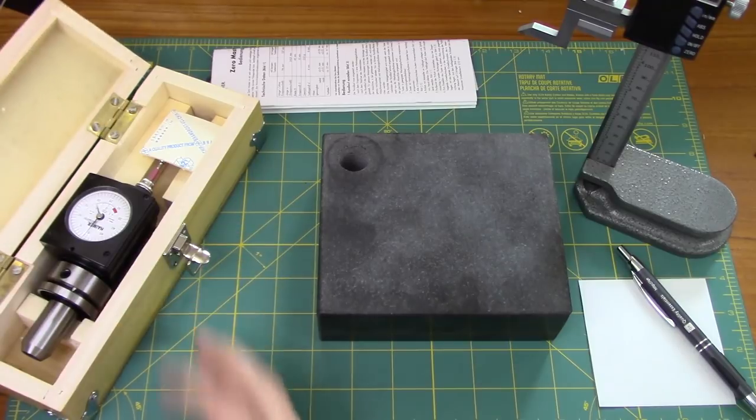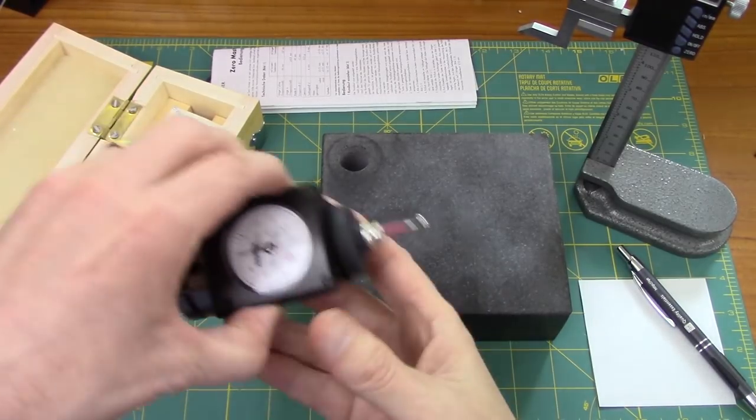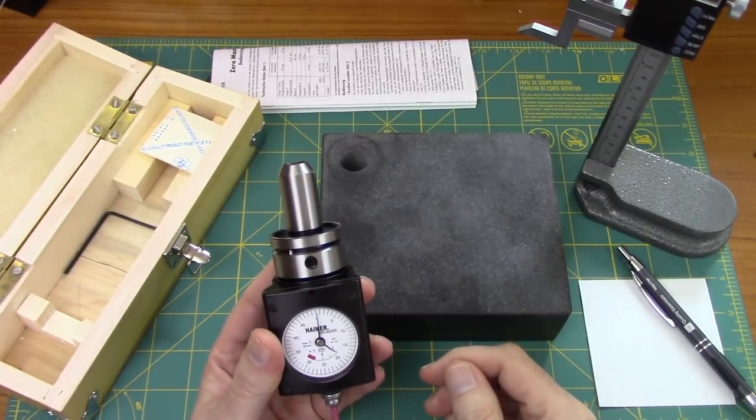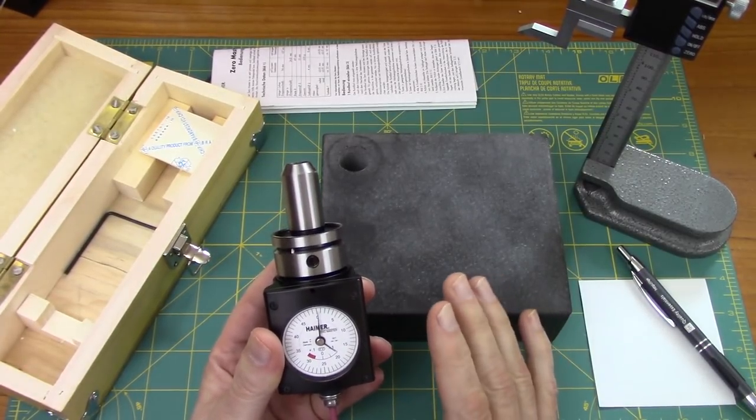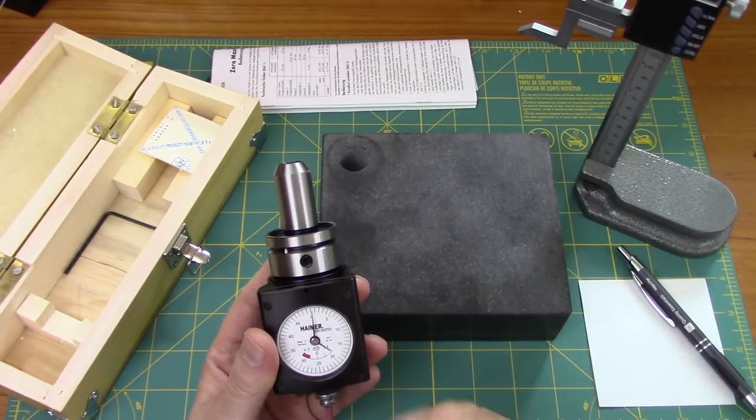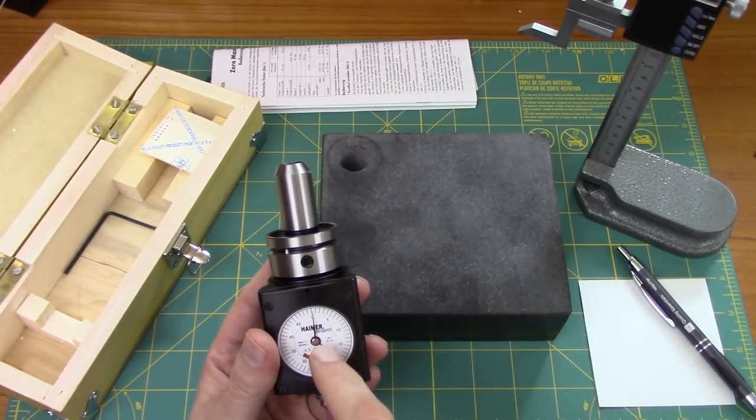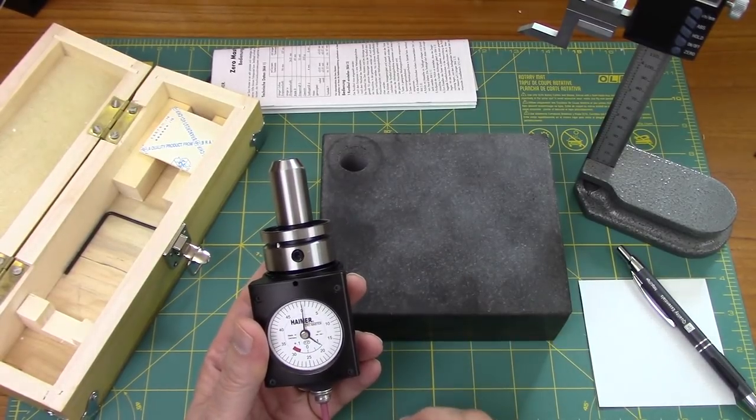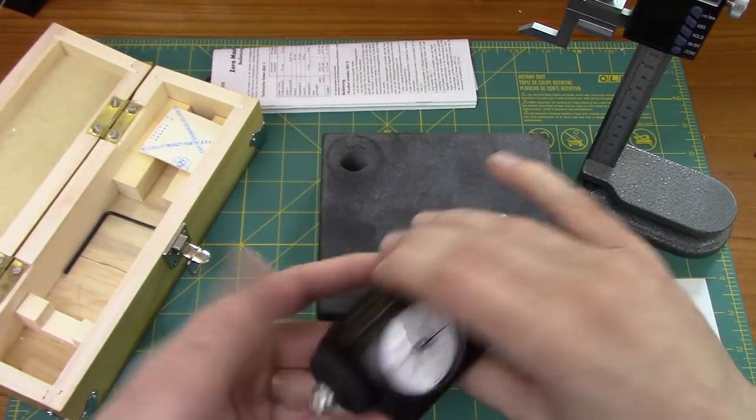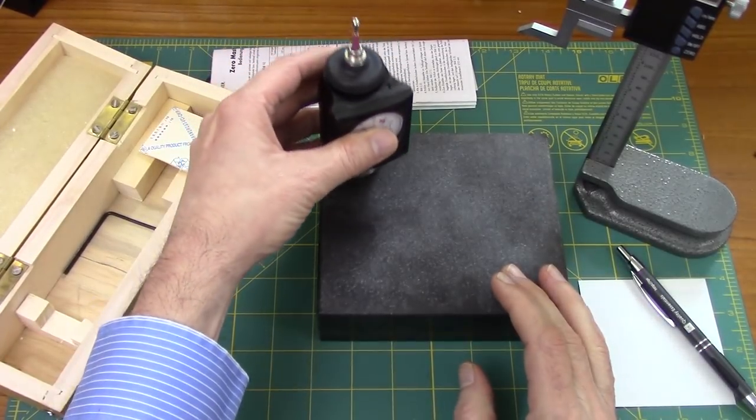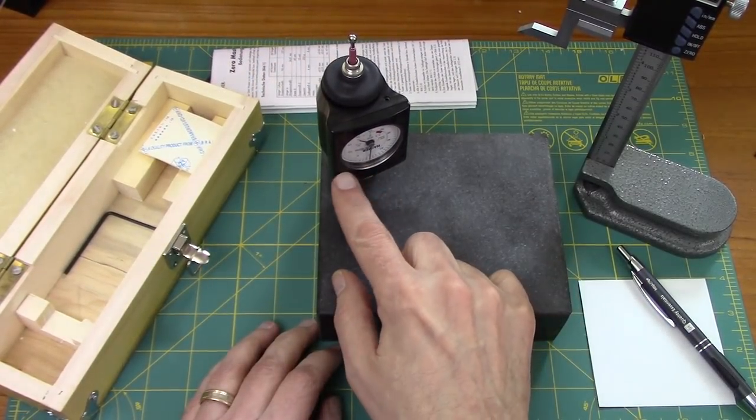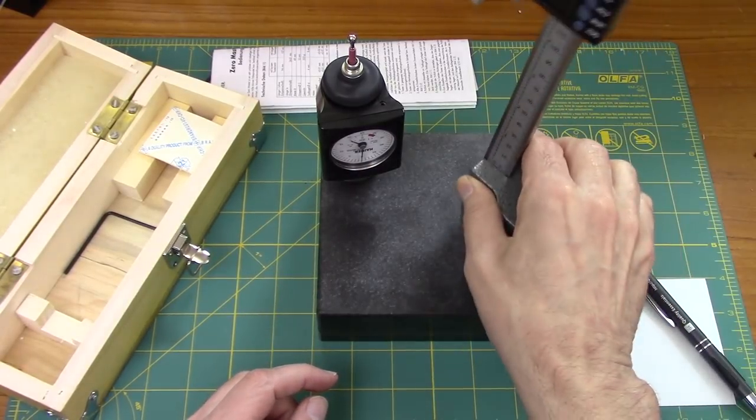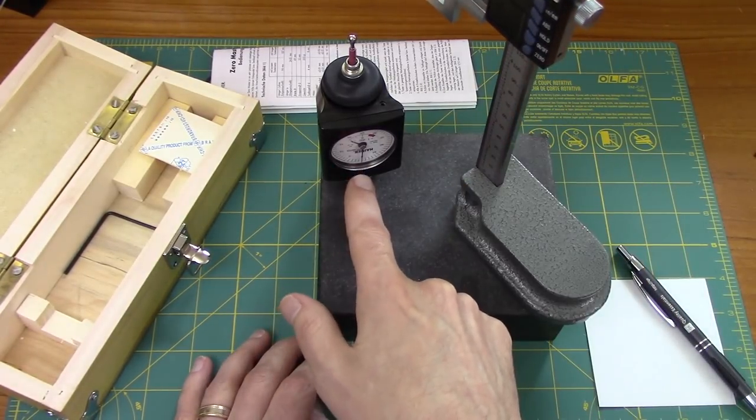I have this Haimer height setter, or I should say 3D tester, that I got, and this is going to be the first time that I use it. Before I use it, I need to calibrate it, or I need to figure out how high this is, in other words, the offset from here to here. First, I'm going to set the height. To set the height, I put it in here, and you can see it's flush there, and it's reading zero.